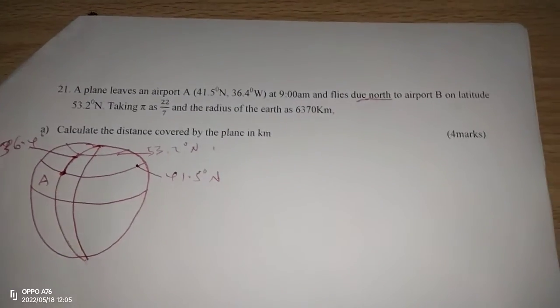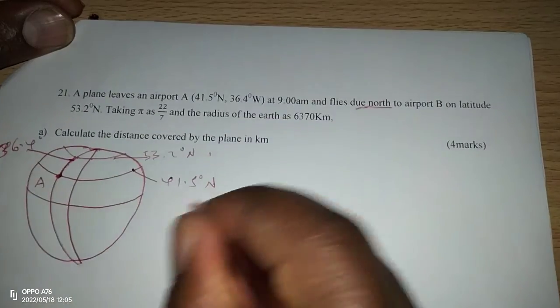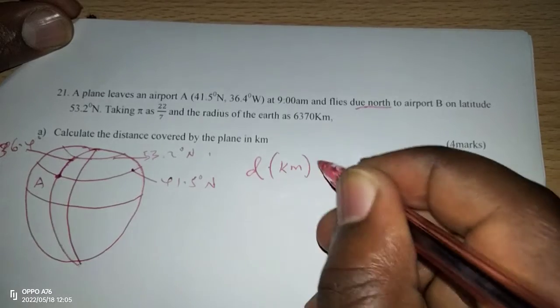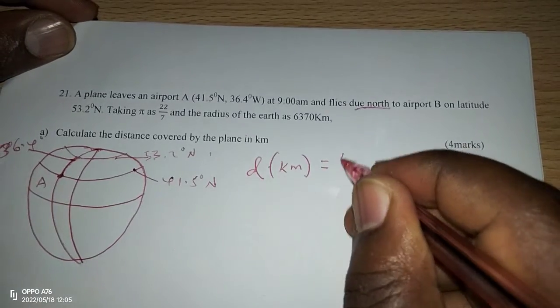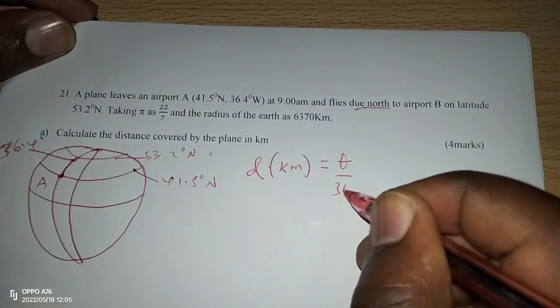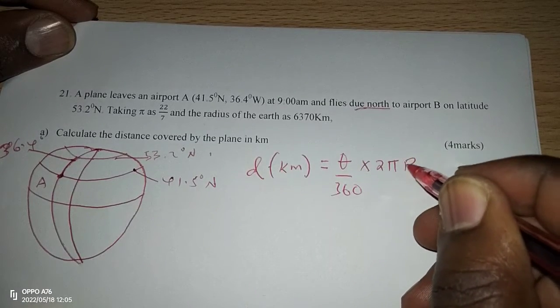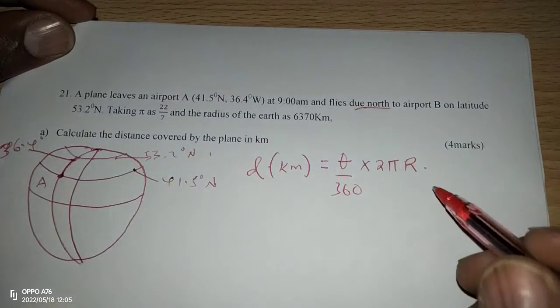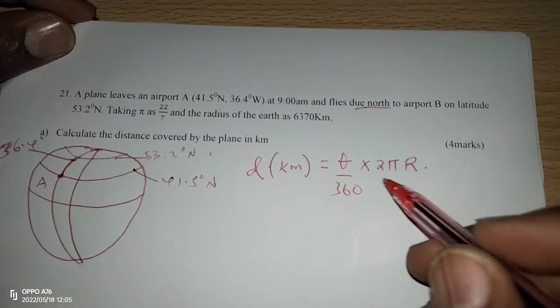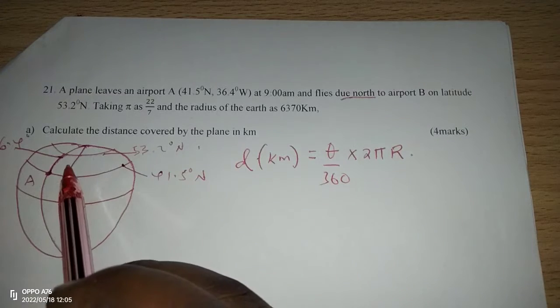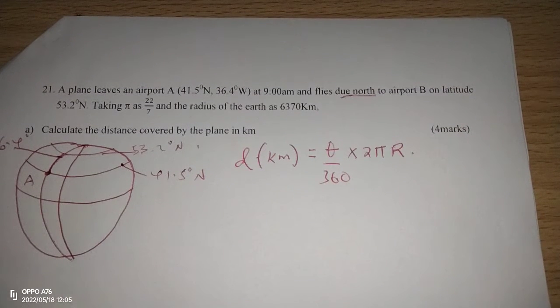The distance covered along a great circle is given by theta out of 360 times 2 pi R, where R is the radius of the earth, and theta is the difference in latitude. Because we are moving from latitude 41.5 until we reach 53.2, then we can subtract and know.